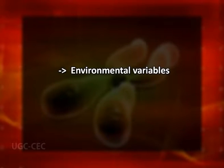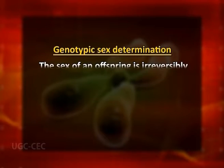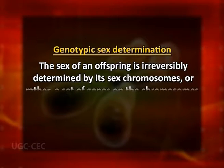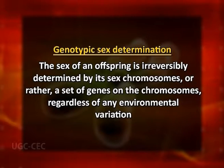In other cases, sex is determined by environmental variables such as temperature or social variables. In many organisms, the sex of an offspring will be irreversibly determined by its sex chromosomes or a set of genes on the chromosomes, regardless of any environmental variation. This condition is known as genotypic sex determination. However, in some organisms, the immediate environment determines whether the offspring will become a male or a female, a condition referred to as environmental sex determination.